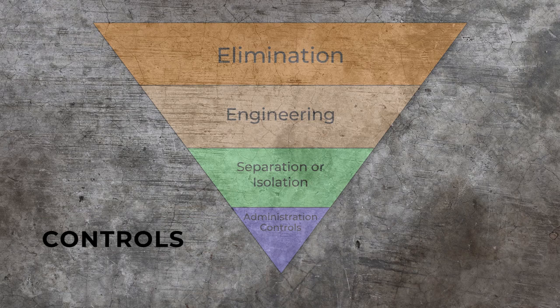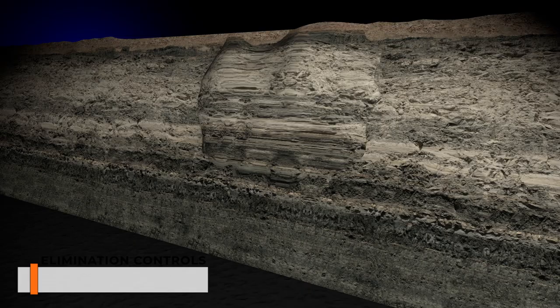Typical controls to manage geotechnical hazards using the hierarchy system include elimination controls: scaling or chaining of slope faces and crests to remove loose rocks, and trim blasting to remove unstable ground.